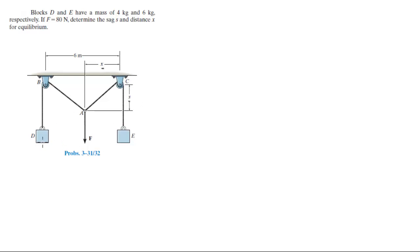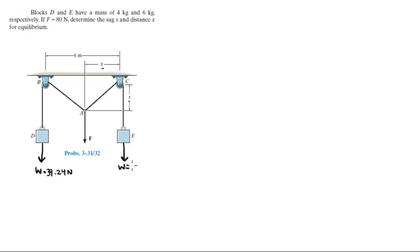I'm going to break this problem down. First we have the weight of D, which has a mass of 4 kg, so the weight is 4 kg times the acceleration of gravity, which would be 39.24 N. And the weight of E, which has a mass of 6 kg — multiply by 9.81 acceleration of gravity and you get a weight of 58.86 N.